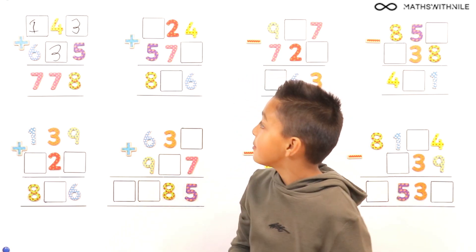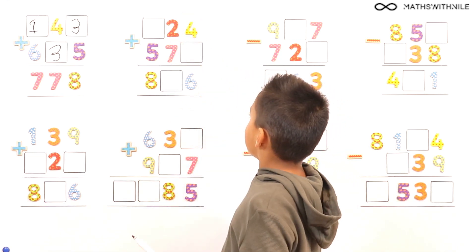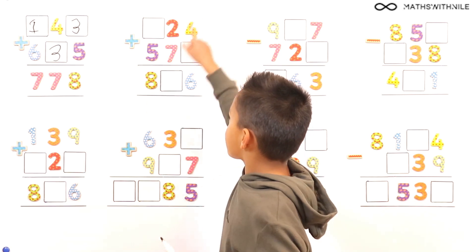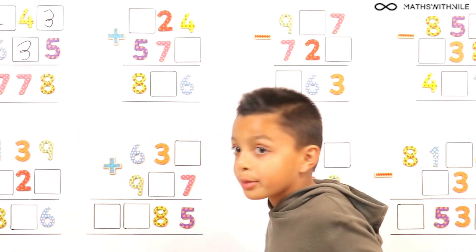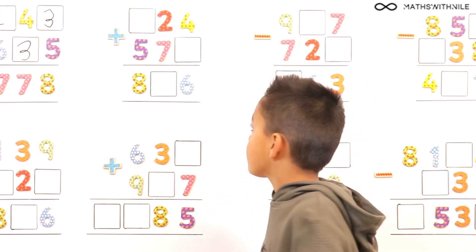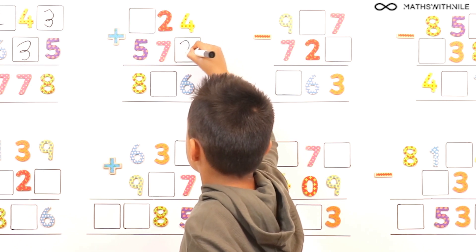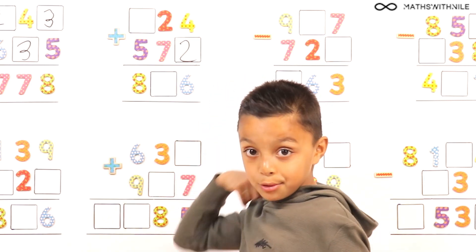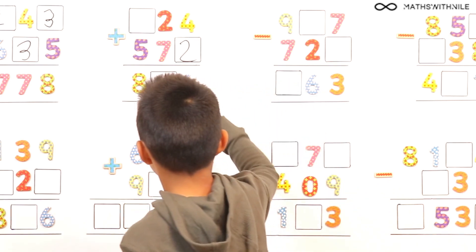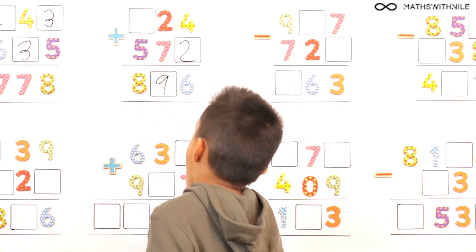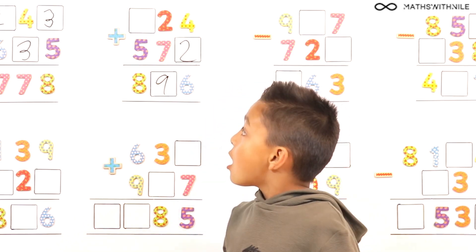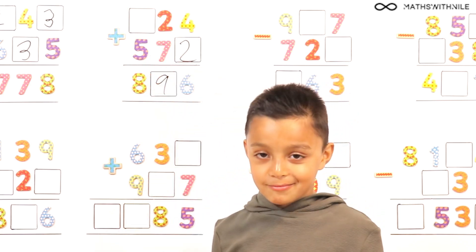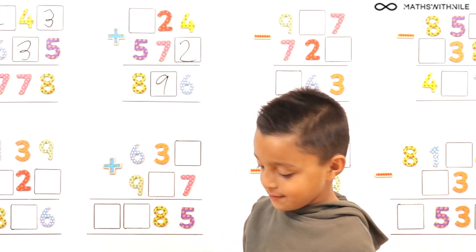Let's go on to the second one. I am starting in the units. 4 plus 2 equals 6, so 2 is missing from there. Good. And then 2 plus 7 equals 9, so we put a 9 there. And then 5 add something equals 8 — what number? 3. 5 plus 3 is 8.